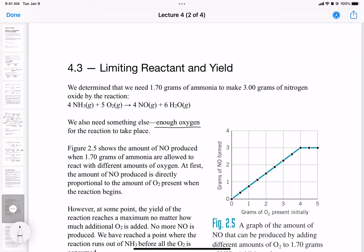So we also need enough oxygen for the reaction to take place. If we don't have any oxygen and we just run this reaction without an atmosphere of oxygen, it won't do anything because the chemical reaction says oxygen is required to oxidize ammonia.